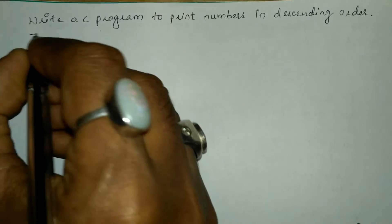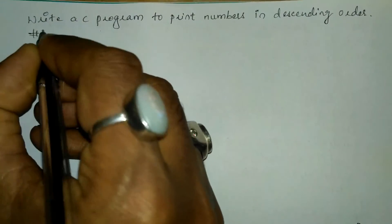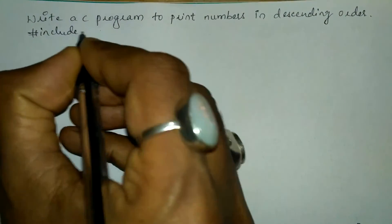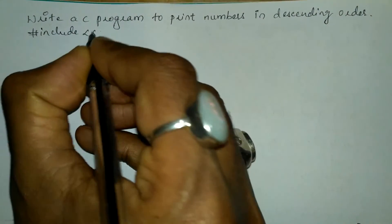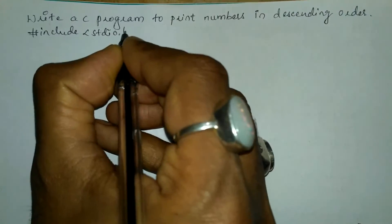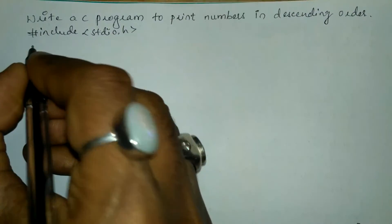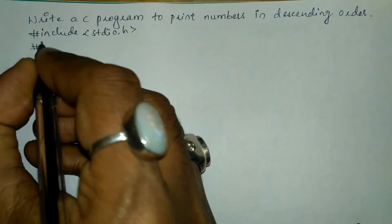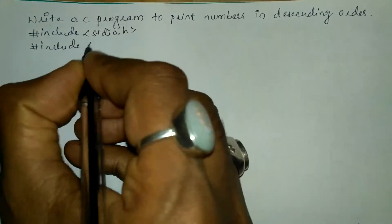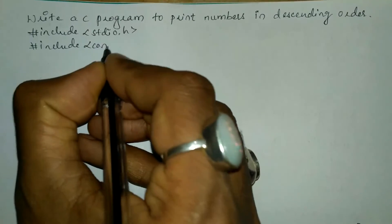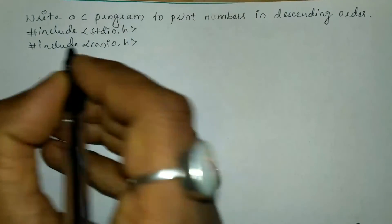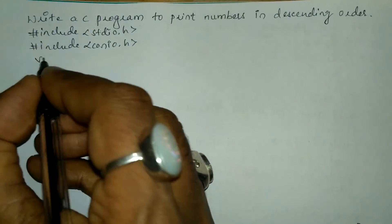Let us write the preprocessor directives: hash include in angular brace, we will write standard input output dot h header file, and the next preprocessor directive hash include in angular brace, we will write console input output dot h header file.